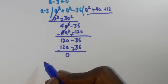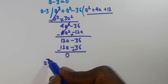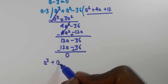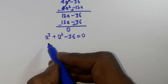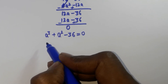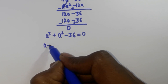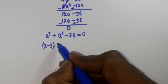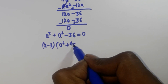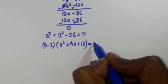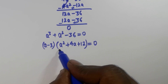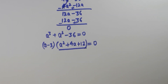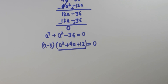So we can write a³ plus a² minus 36 equal to 0 as a minus 3 times a² plus 4a plus 12 equal to 0. This second factor is a quadratic equation, and we have to get the roots of this quadratic equation.